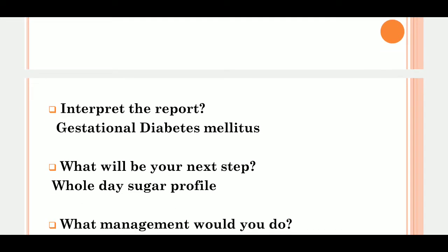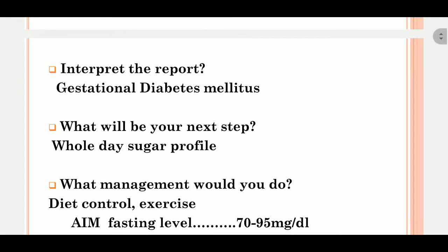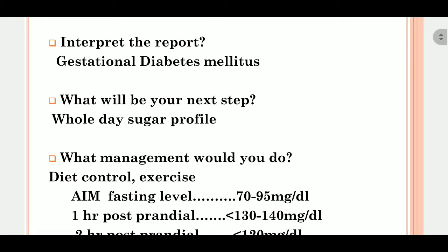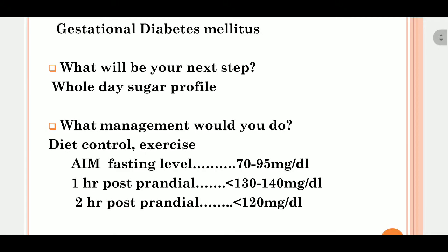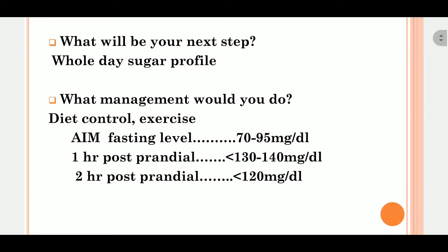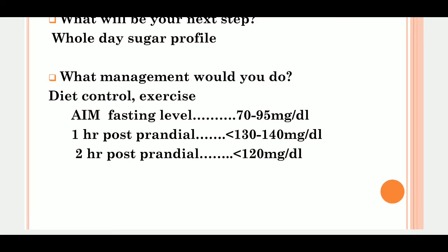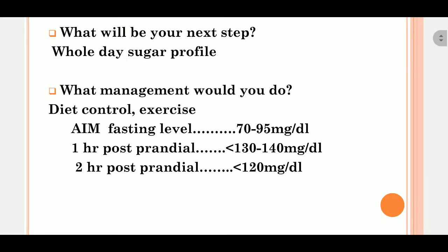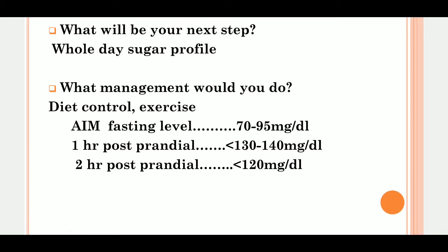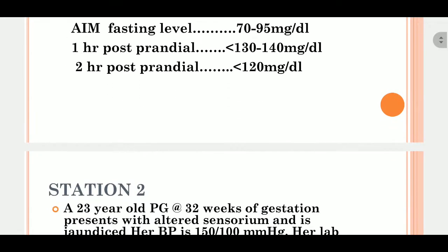Regarding management: first, I would ask the patient to control her diet and tell her about the target levels. We aim for fasting glucose of 75 to 95 mg/dL, 1-hour post-prandial less than 130 to 140 mg/dL — 1 hour should be below 140 — and 2-hour post-prandial should be below 120 mg/dL.